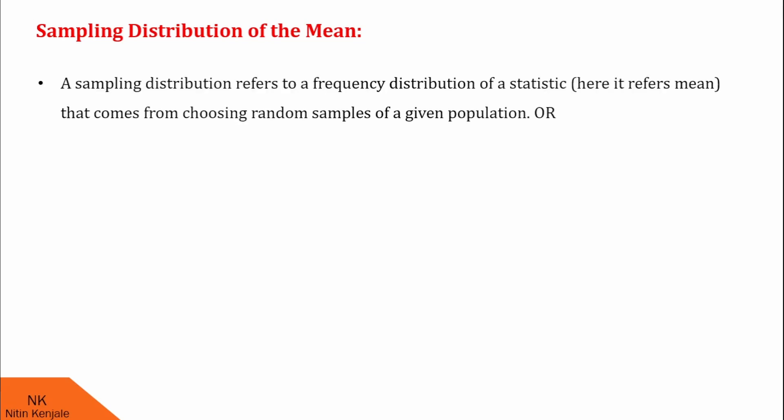So let us proceed with this question. What is sampling distribution of the mean? A sampling distribution refers to a frequency distribution of a statistic. Here it refers to the mean that comes from choosing random samples of a given population.